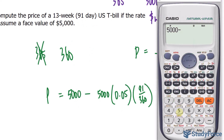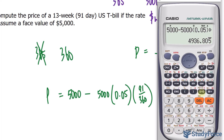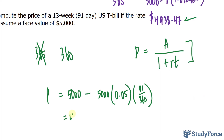So: P = 5,000 − 5,000 × 0.05 × (91/360). Essentially, this is a 5% decrease from $5,000 given 91 days out of 360. We end up getting a value of $4,936.81. We've discounted $5,000 back 91 days, so that is how much you would have to pay today. Notice the difference between this value and the one calculated using the Canadian system — it's slightly lower.